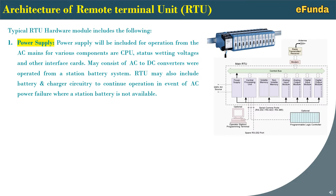First, power supply. Power supply will be included for operation from the AC mains for various components — CPU, status, waiting voltage, and other interfaces. The card may consist of an AC-to-DC converter operated from a station battery system. The RTU may also include battery and charger circuitry to continue operation in the event of AC power failure where a station battery is not available.